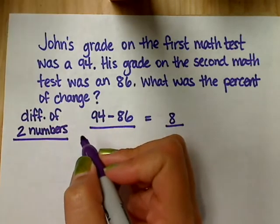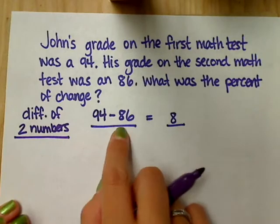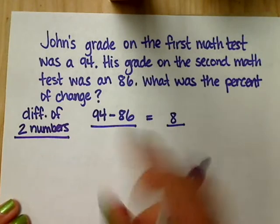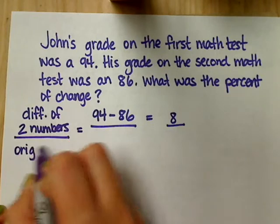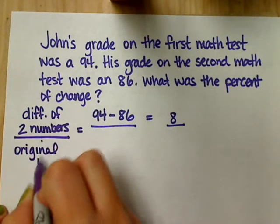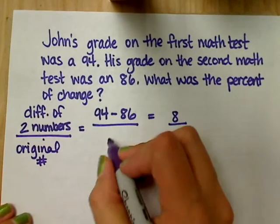Thank you. I found the difference of the two numbers, 94 minus 86. And what belongs on the bottom? Because it's the original, yeah? Original number is always your denominator. So original was 94.